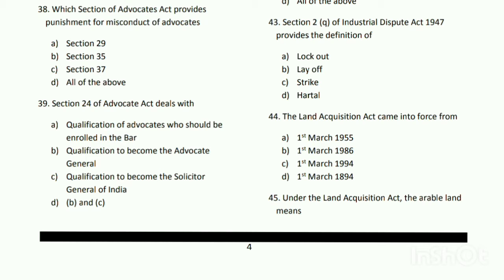Section 35 of the Advocates Act provides punishment for misconduct of advocates. Question number thirty-nine: Section 24 of the Advocates Act deals with what? The answer is A - the qualification of advocates who should be enrolled in the bar.